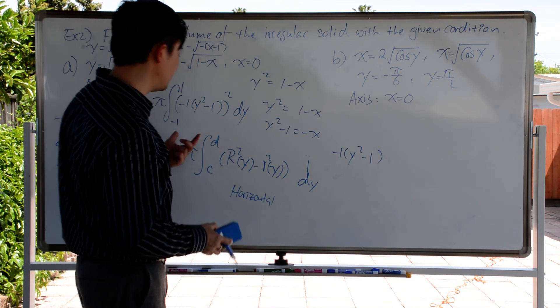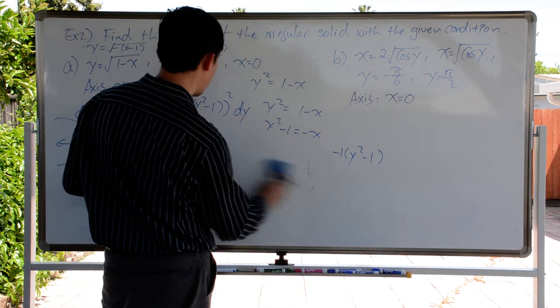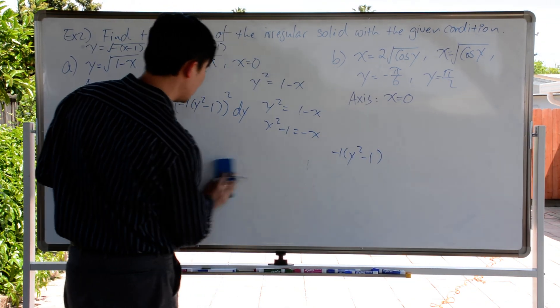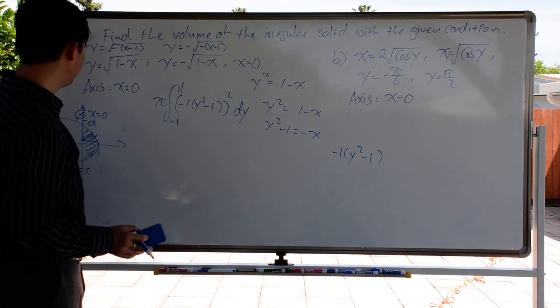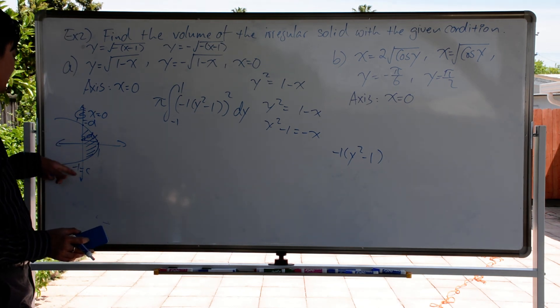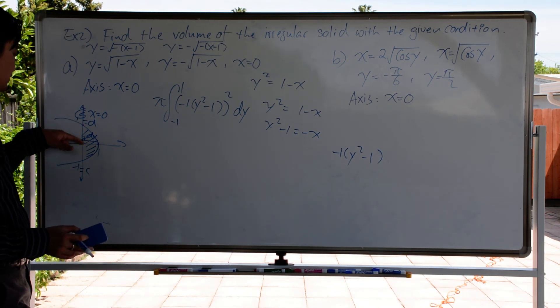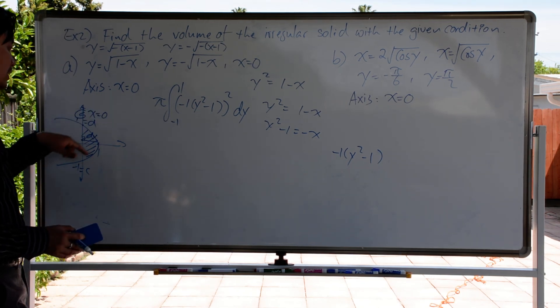The rest is: expand it, integrate it. Also, since it's symmetrical, you can find the volume for part of the region and then multiply by 2.